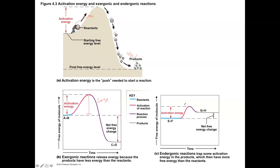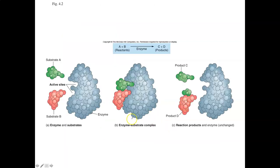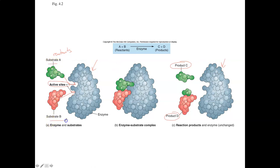The enzyme basically participates with the reactants to produce the final products. In a typical enzymatic reaction, you would have substrates or reactants. Those substrates would interact with the enzyme at a location called the active site. The substrate would fit into the active site, and then the enzyme would help to speed up and catalyze the reaction so that eventually you can produce products. Notice that the enzyme isn't changed — the substrates have changed as we produce new products.